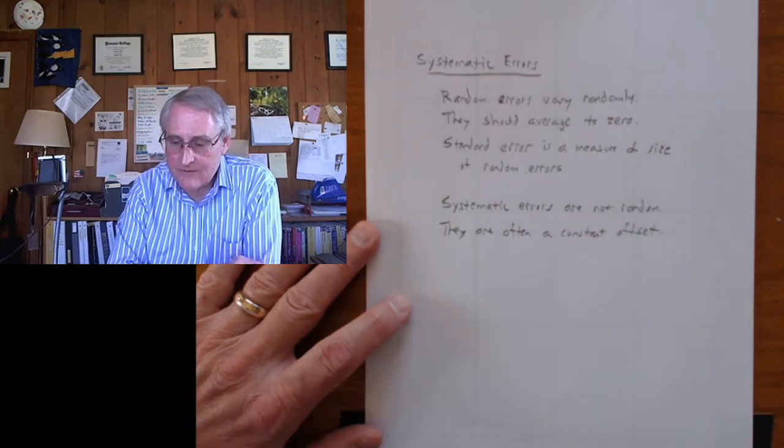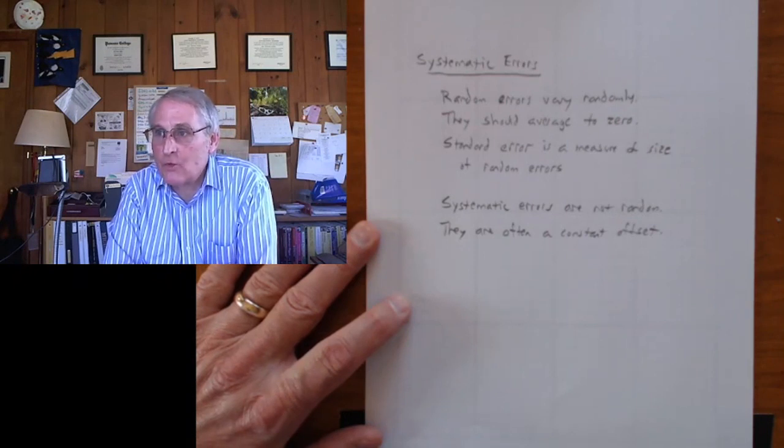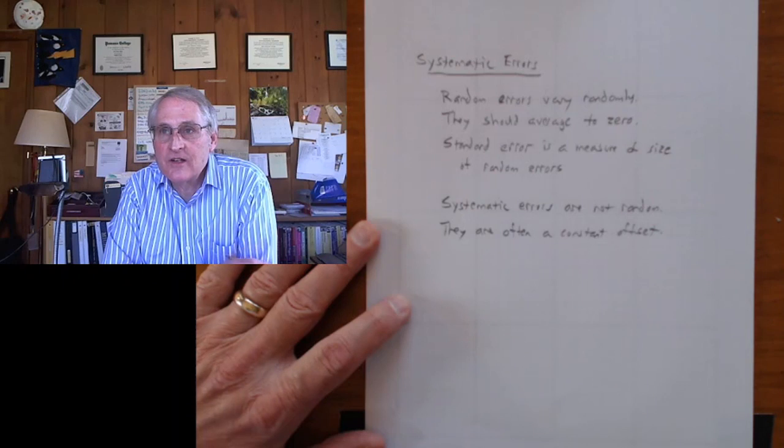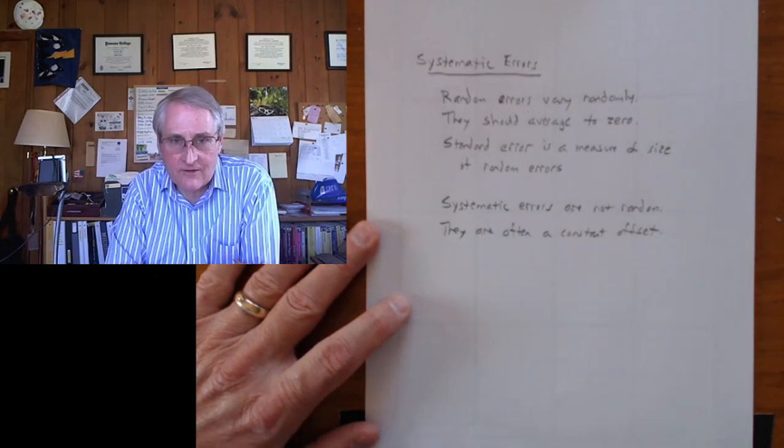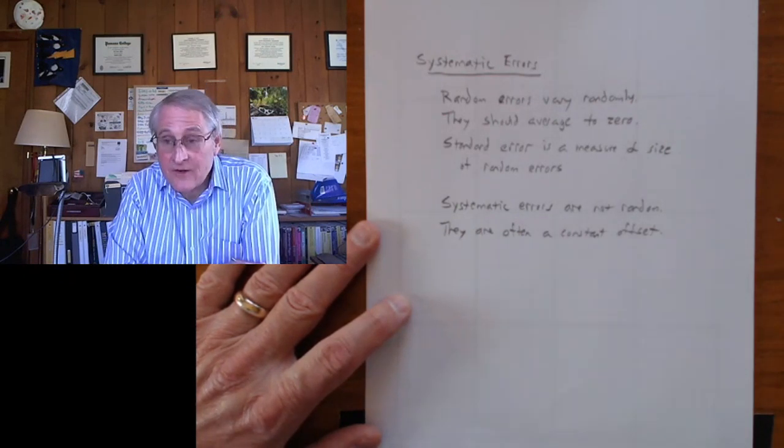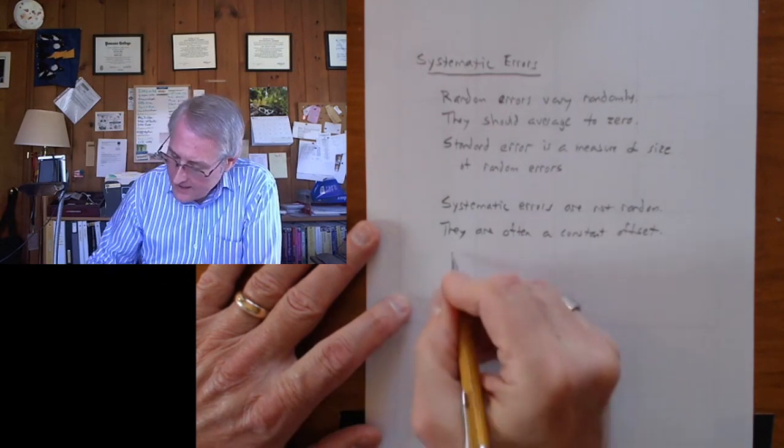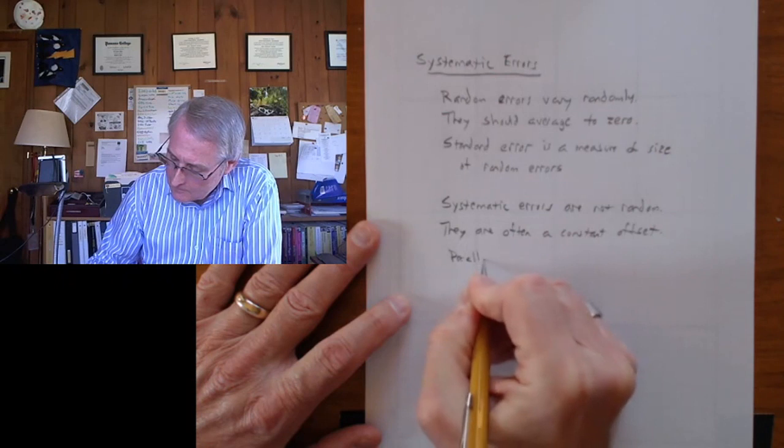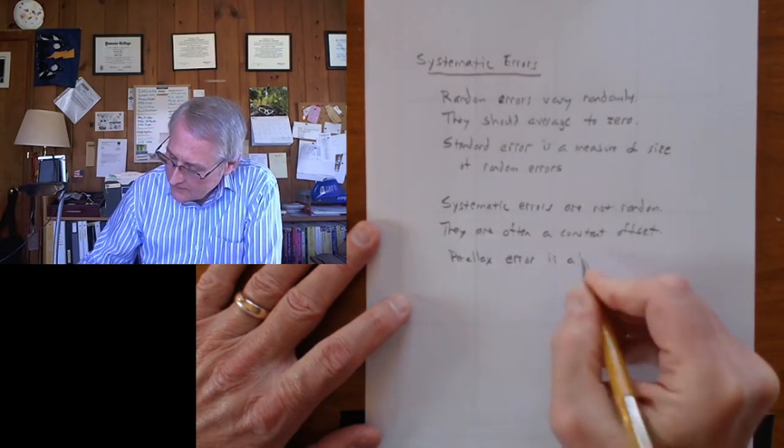A simple example you may have seen in Physics 1 is if you're using a ruler that's really old and the end has worn off, then it would be shorter than it should be. And your measurements will all be off if you bump the ruler up against something to measure it. In this case, there's a potential for what's called parallax error. Parallax is a systematic error.